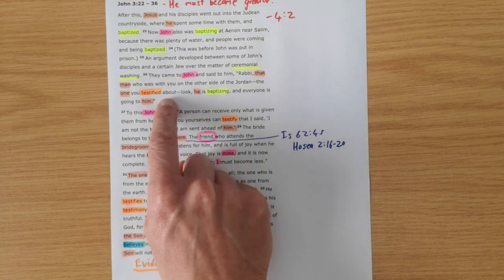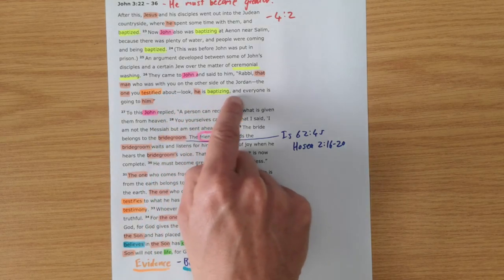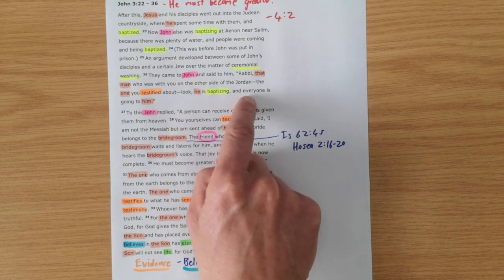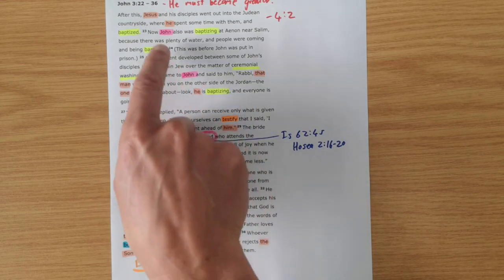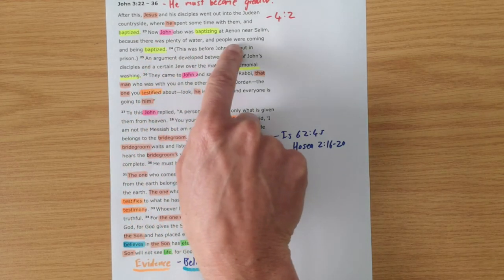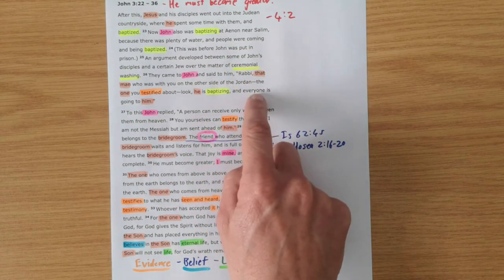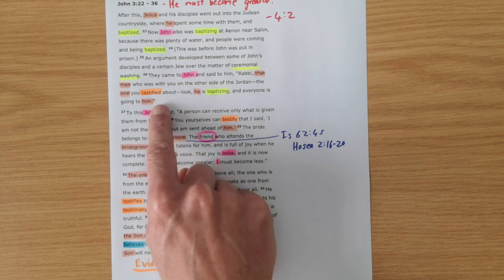And John's disciples look in and they say, look, everyone's going to him. Now that's an exaggeration because verse 23 told us that people were going to be baptized with John too. So not everyone was going, but there was a jealousy growing in John the Baptist's disciples.